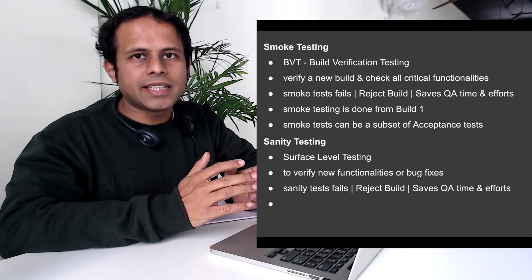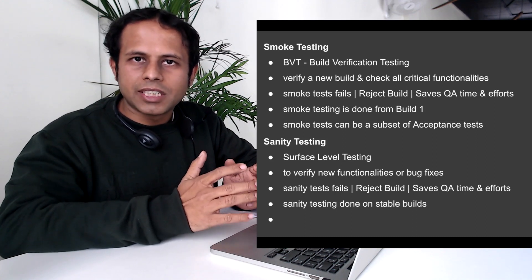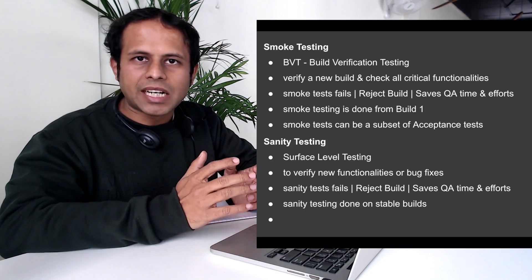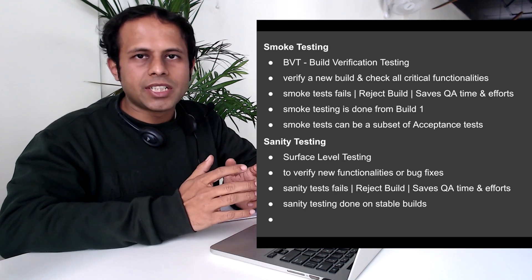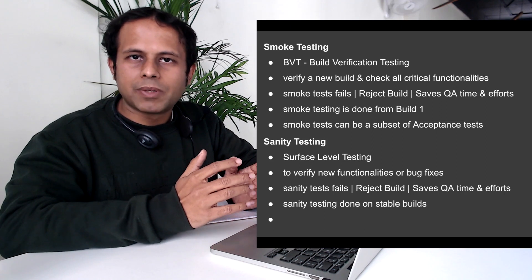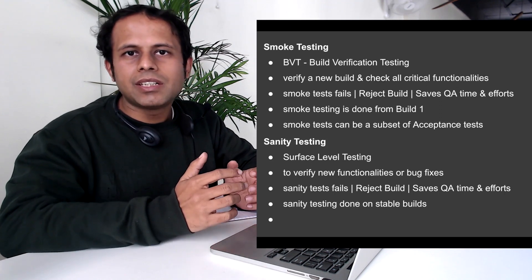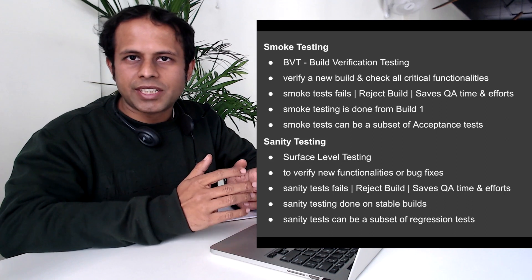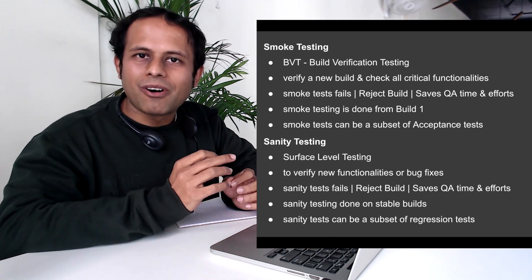Sanity testing is mostly done on a stable build. Unlike smoke testing, which can be done right from build number one, sanity testing is generally done when the application or builds are much more stable. In general, sanity tests can be a subset of regression testing. I hope now you'll always remember what is smoke testing, what is sanity testing, and what are the differences. See you in the next video, thank you for watching.